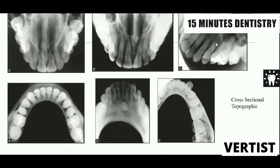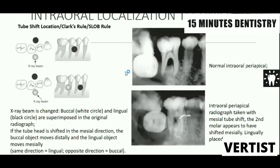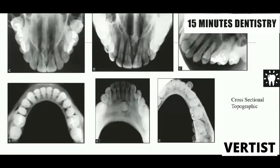Looking at the occlusal views: the upper ones are maxillary and the lower ones are mandibular. The cross-sectional view has a point of entry from the bridge of the nose, whereas the topographic anterior view has the point of entry from the tip of the nose. There is also a topographic lateral view on the lateral side. Left or right must be specified as per the directions.